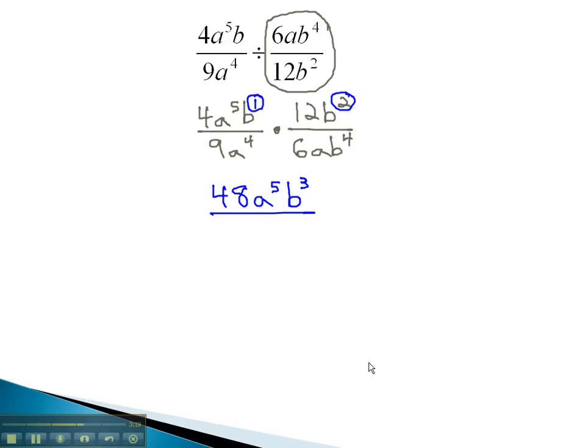In the denominator, we can multiply straight across to get 9 times 6, or 54, a to the 5th, which we get from adding 4 plus 1, b to the 4th.